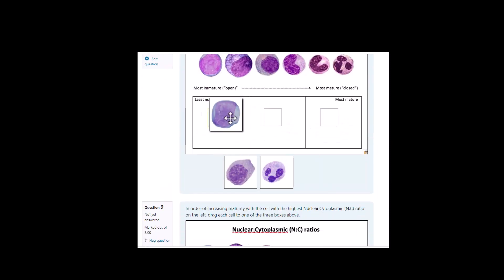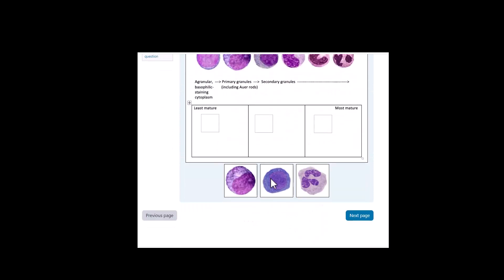Here's an example of what's a blast, what's a neutrophil, and what's a myelocyte. You just move the cells and decide and get graded automatically.